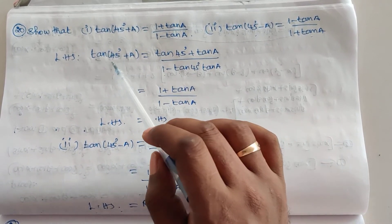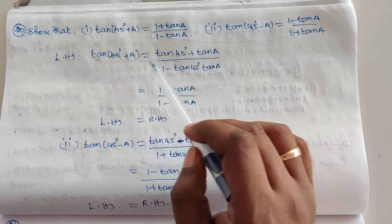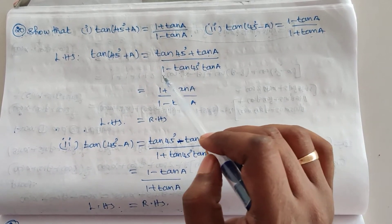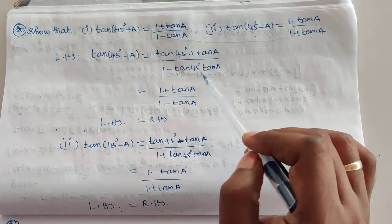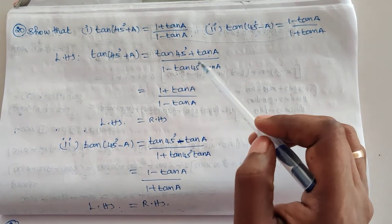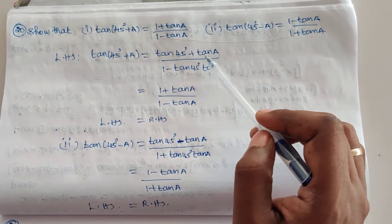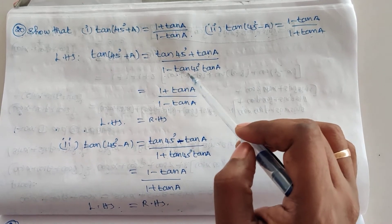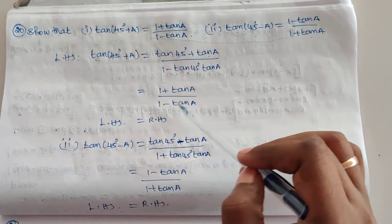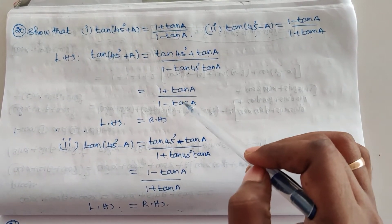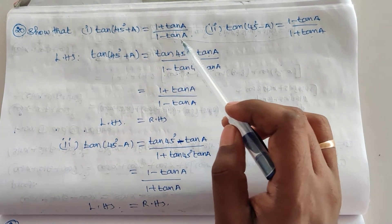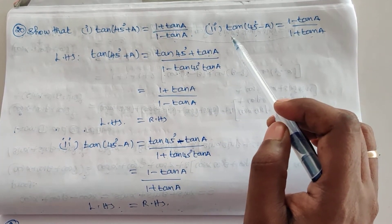Here A = 45° and B = a, so we get: tan 45° + tan a, the whole divided by 1 minus tan 45° · tan a. We already know tan 45° = 1, so this becomes (1 + tan a) / (1 - 1·tan a) = (1 + tan a) / (1 - tan a). That is what we had to prove for the first sub-question.